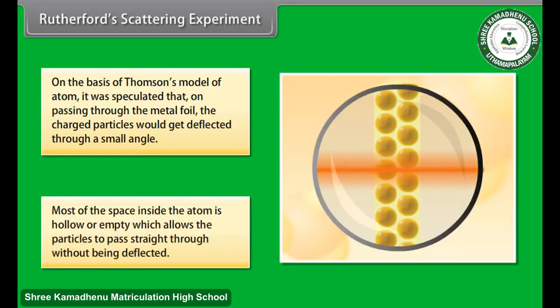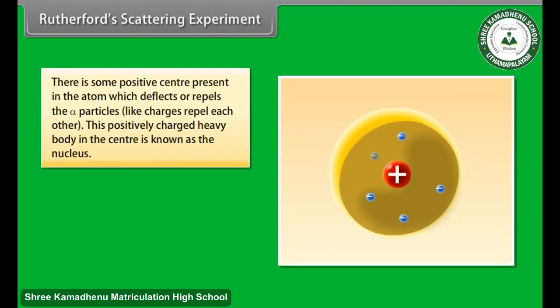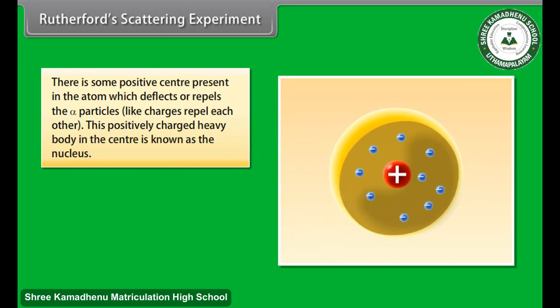1. Most of the space inside the atom is hollow or empty, which allows the particles to pass straight through without being deflected. 2. There is some positive center present in the atom which deflects or repels the particles, like charges repel each other.